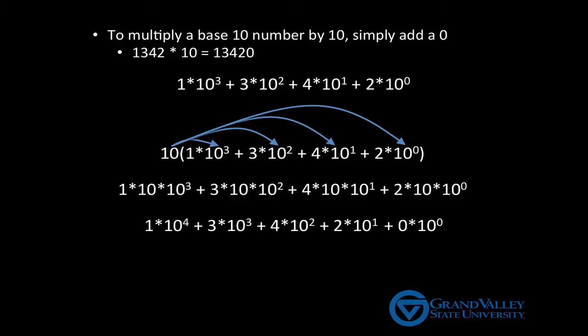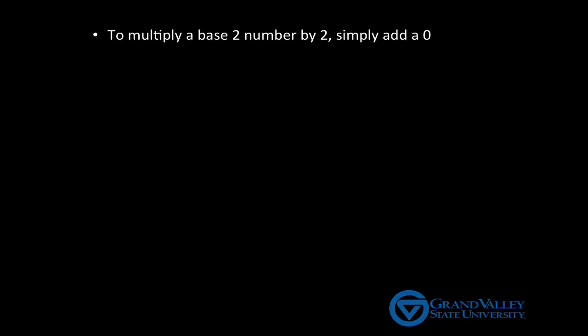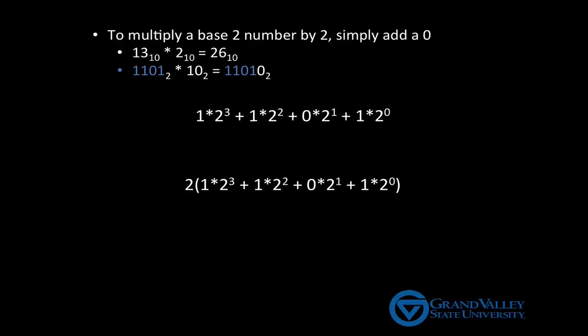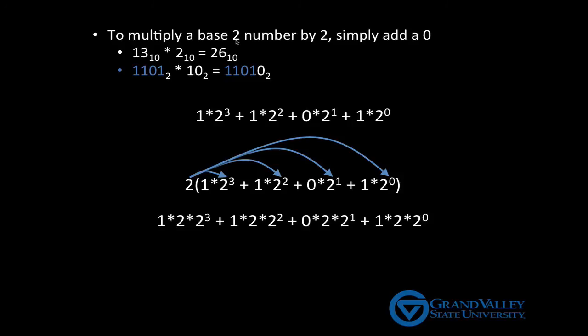The same principle applies to base 2. To multiply a base 2 number by 2, you also simply add a 0. For example, 13 times 2 is 26, and when you look at their binary values, you see that the binary value for 26 is the binary value for 13 followed by a 0. And this works for the same reason it works in base 10. So if we were to take the binary expansion of 13, multiply it by 2, and distribute that 2 over all of the terms, each term then has a power of 2 multiplied by 2, which simply adds 1 to each exponent. And as before, we'll add 0 times 2 to the 0 to get a binary expansion of 26.